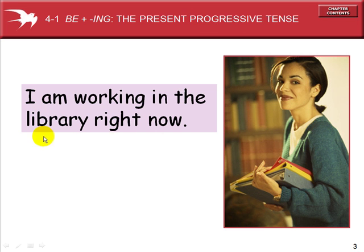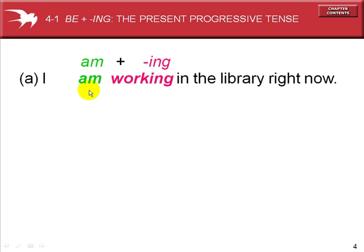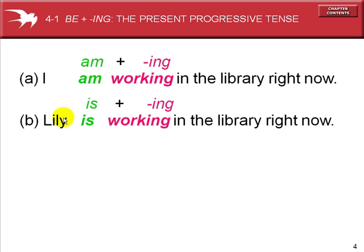I am working in the library right now. The construction is the subject, a form of the verb to be, a verb to which we add the ing ending, and the prepositional phrase or the end of the sentence. Lily is working in the library right now. Lily takes the third person singular of the verb to be — the same construction: work plus ing, in the library right now.